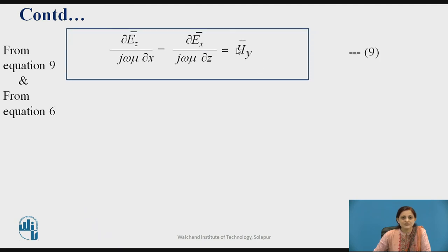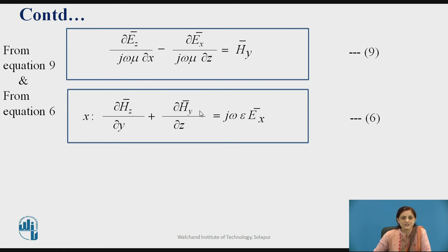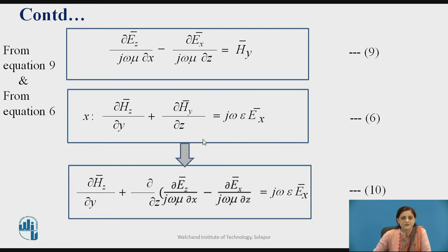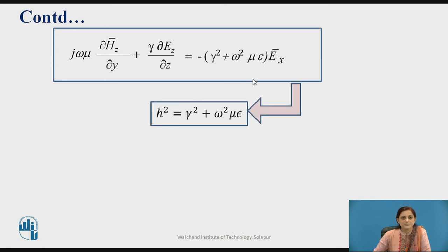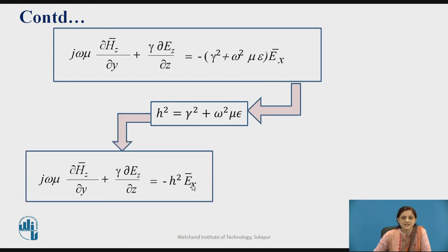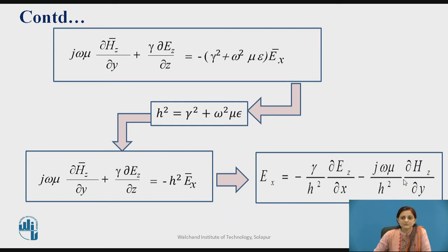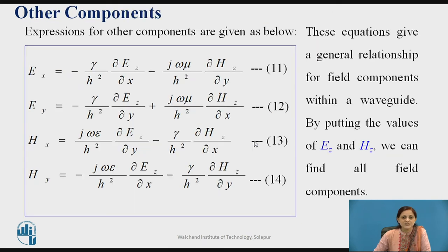Knowing the 9th equation (which has the y component of the magnetic field) and equation 6 (which also contains Hy), you can substitute the value of Hy from equation 9 into equation 6. By rearranging, you again get a bracket containing constants on the RHS, which can be replaced by H-squared. The Ex component can then be found by transferring H-squared to the LHS side, giving the equation for the x component of the electric field. Similarly, other field components for the magnetic and electric fields can be found. Equations 11 to 14 give the general relationships for the field components within the waveguide. By substituting the values of Ez and Hz, we can find all field components.